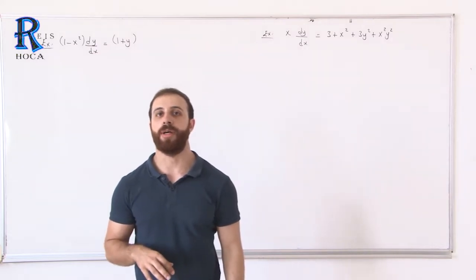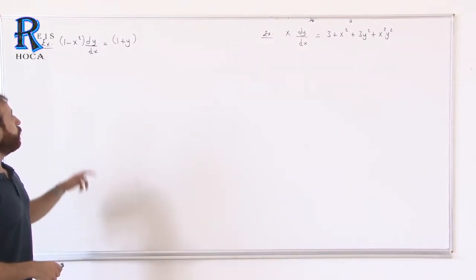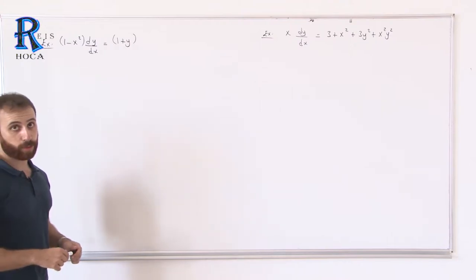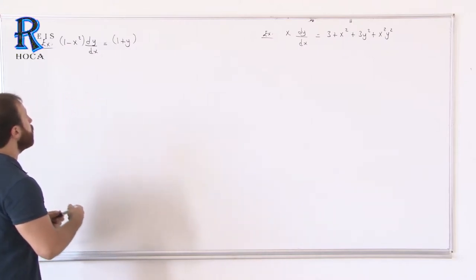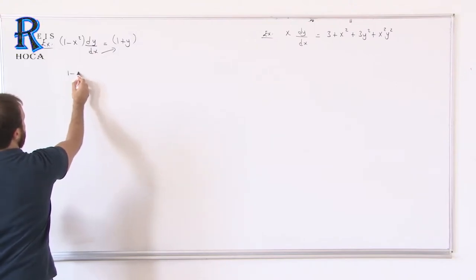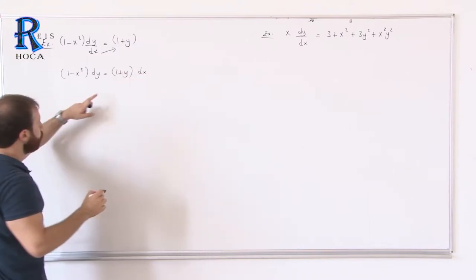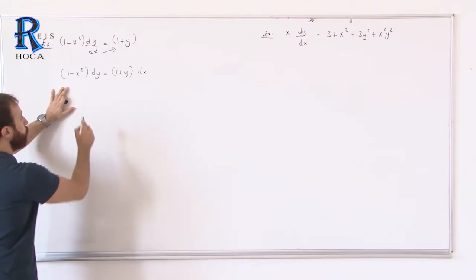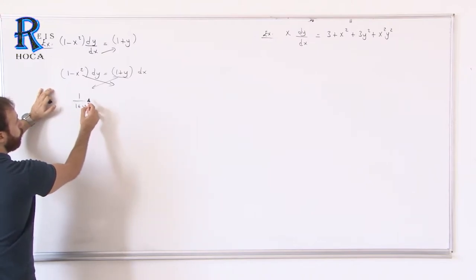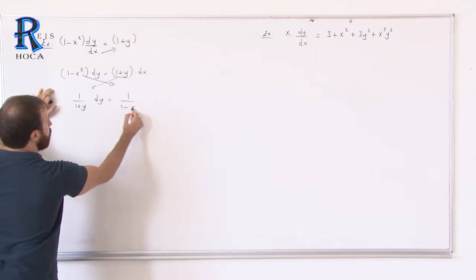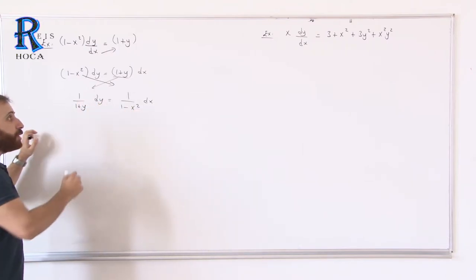Let us solve a more difficult question related to separable equations. The first one: dy/dx equals 1 over (1 minus x squared) times (1 plus y). For a separable equation, in front of dx there must be only x, and in front of dy only y. So we send x to the right side: 1 over (1 plus y) dy equals 1 over (1 minus x squared) dx. This is separable.